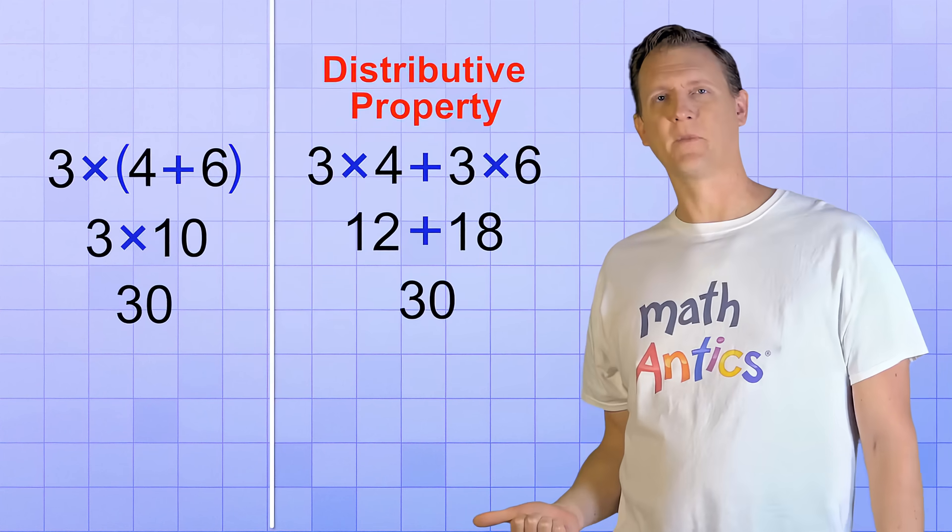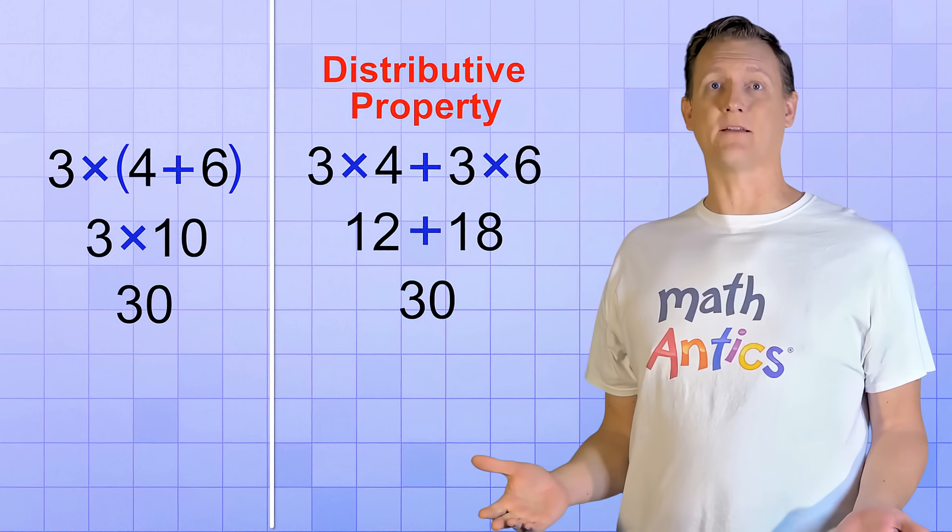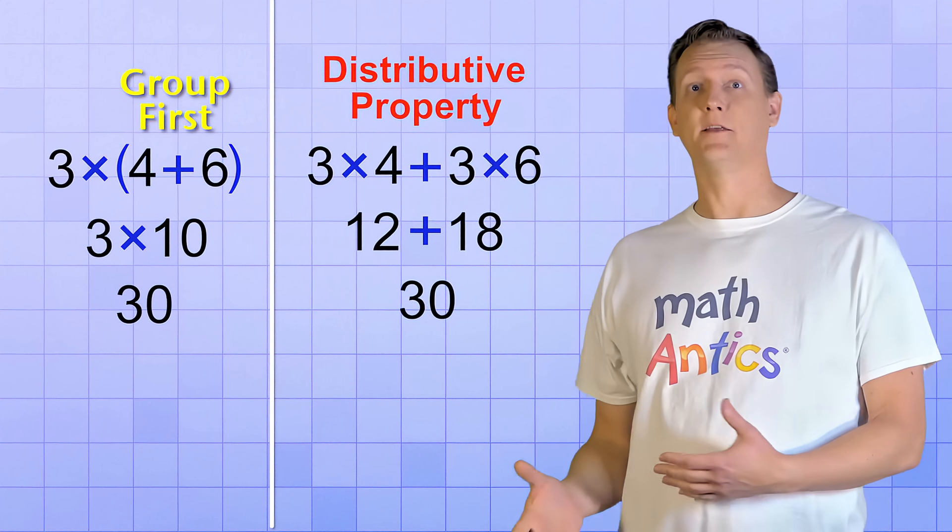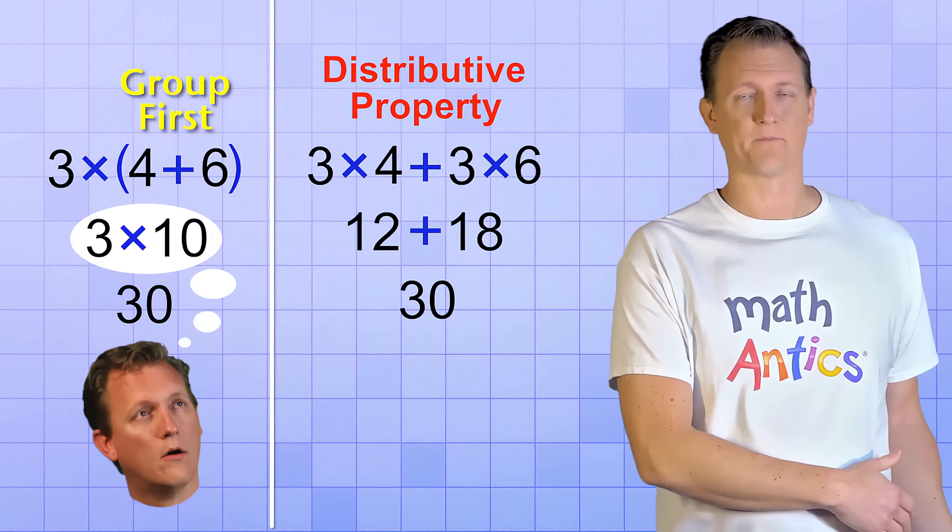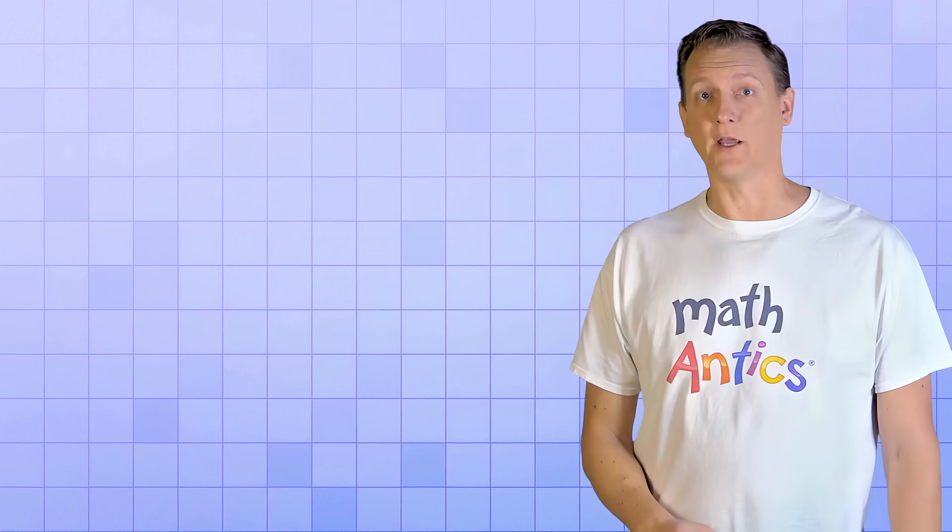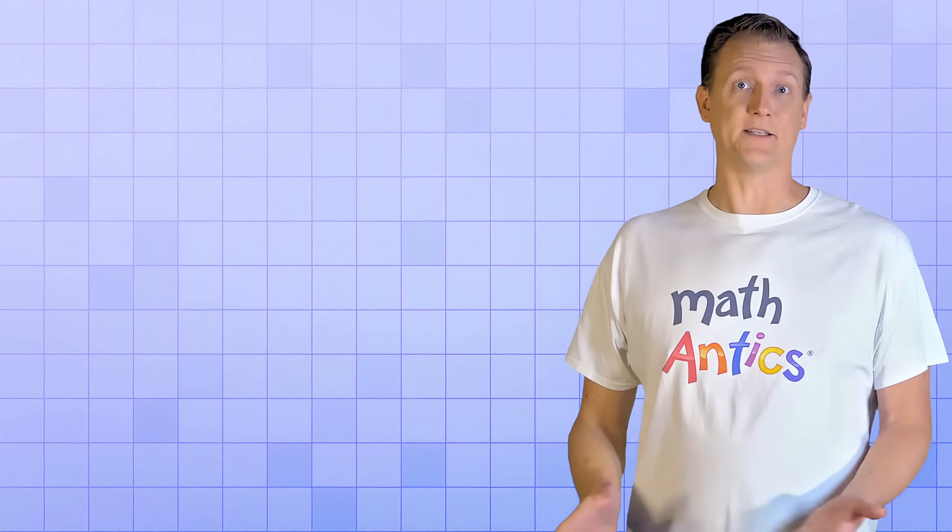There are times when the Distributive Property way is harder. Like in our first problem. It was easier to just go ahead and simplify the group first, because it's easy to multiply 3 times 10 mentally. But there are also times when the Distributive Property way is easier.